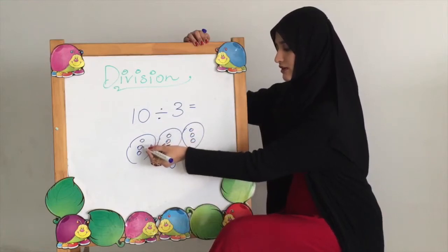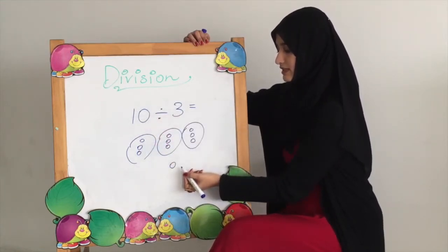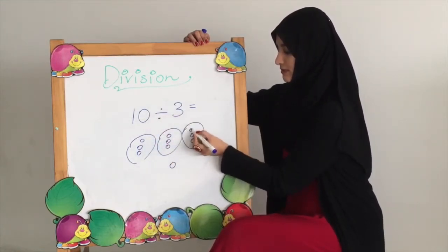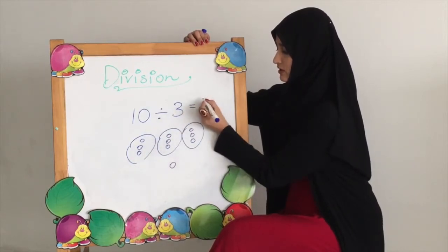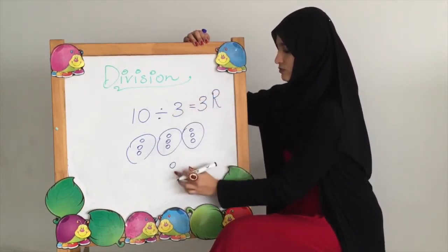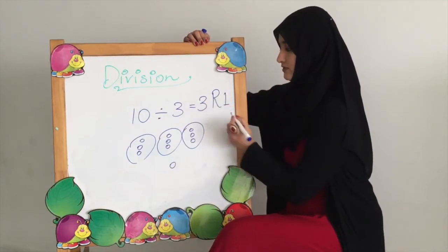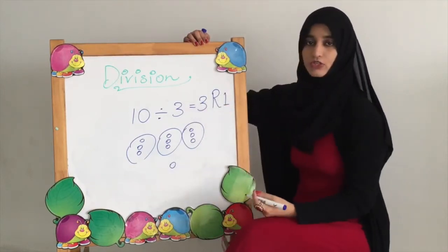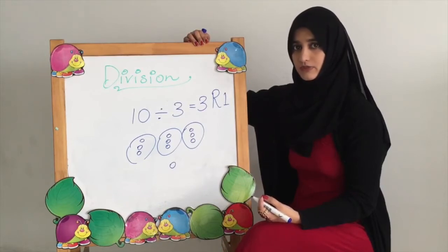So now the answer is going to be 10 divided by 3 equals 3, because each set has 3 balls. And the remainder is 1. That's the one object that's remaining. We could not distribute it because it would make the division unequal.